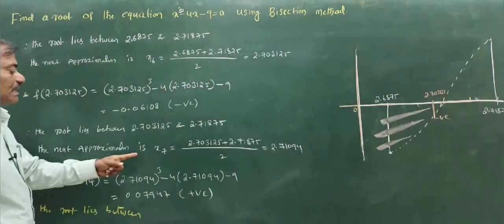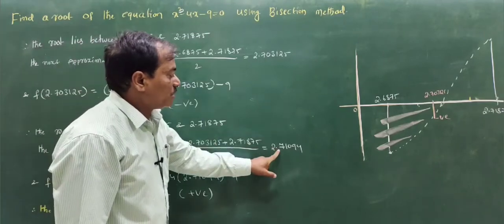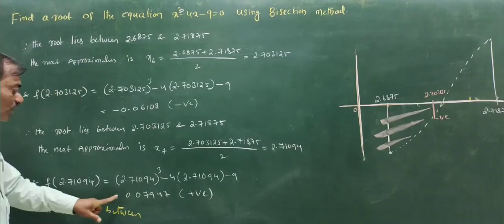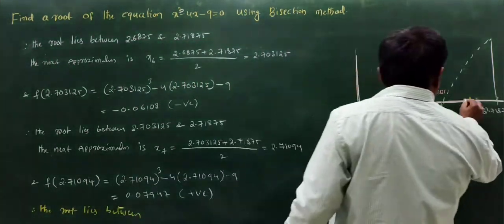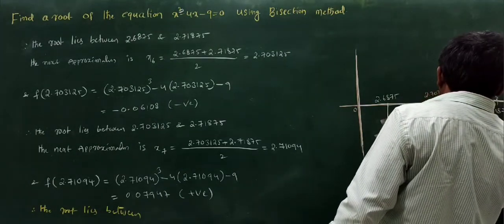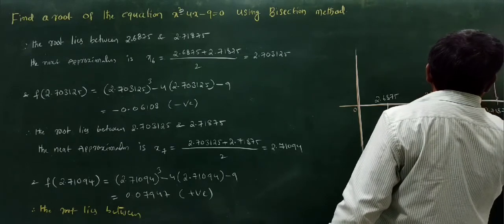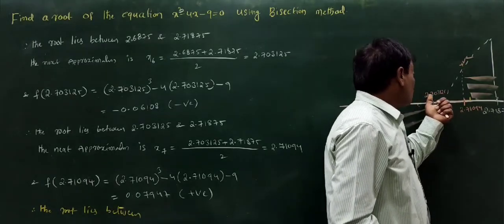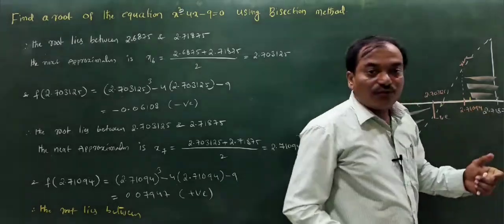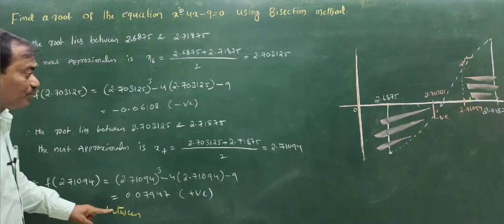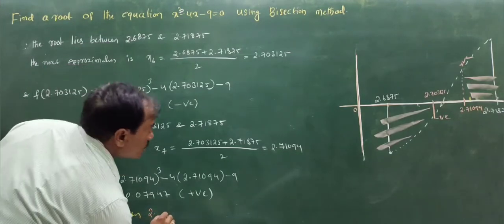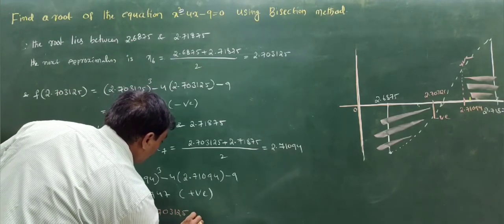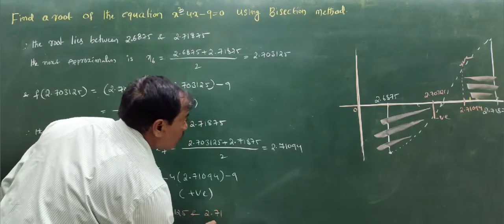The seventh approximation: x7 = (2.703125 + 2.71875) / 2 = 2.71094. We find the function value at this point, which is positive. So we discard the interval [2.71094, 2.71875]. The root lies between 2.703125 and 2.71094.